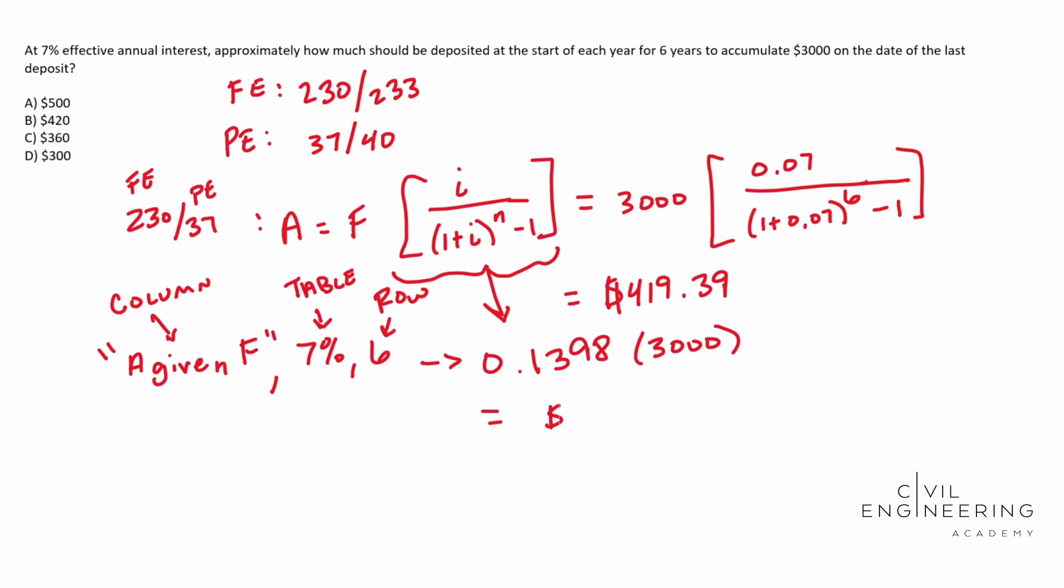And so you end up with 419.40, which is pretty darn close. It doesn't affect the answer. So practice with that. It will make you so much quicker solving these problems because it gives you everything in the problem. All you need to do is go to that table, find what interest you're at, find the row as in the number of installments, and then find what you're solving for. And boom, there's your answer.